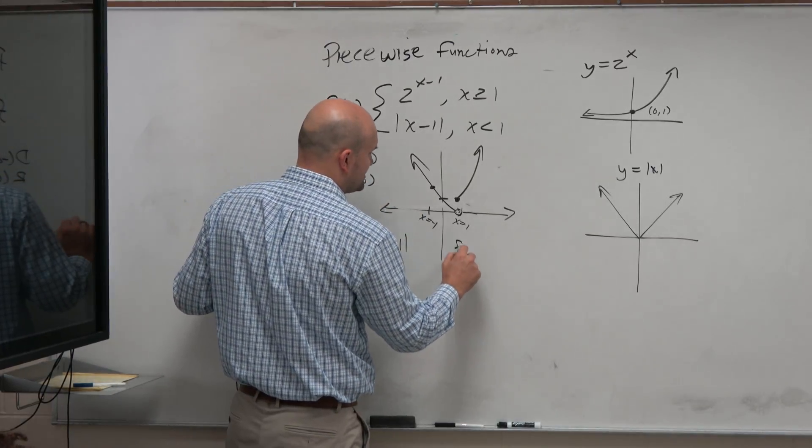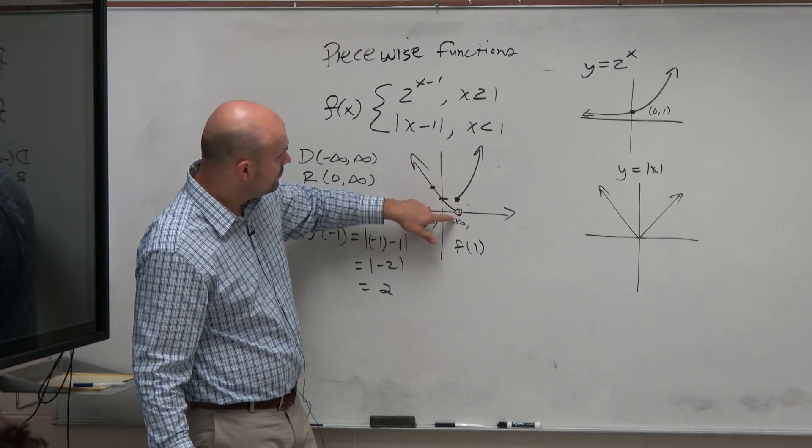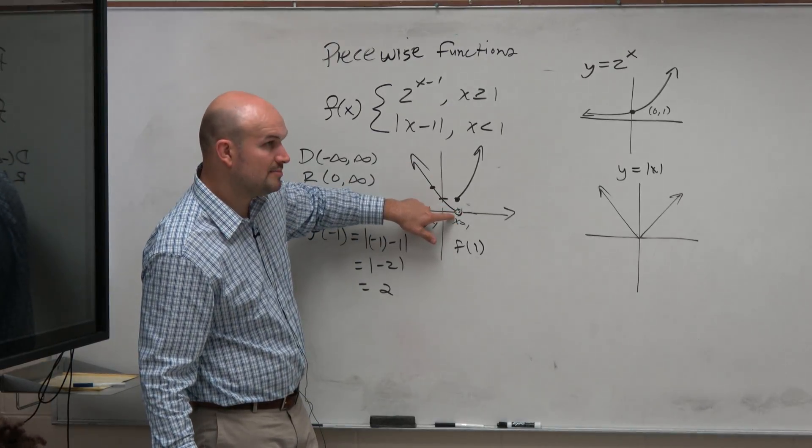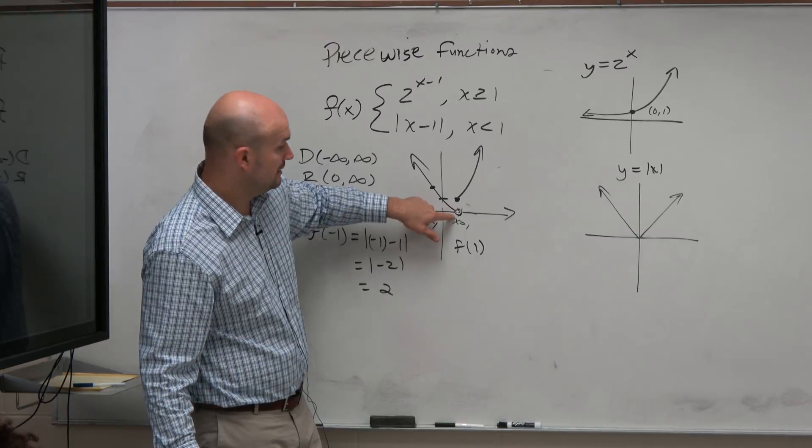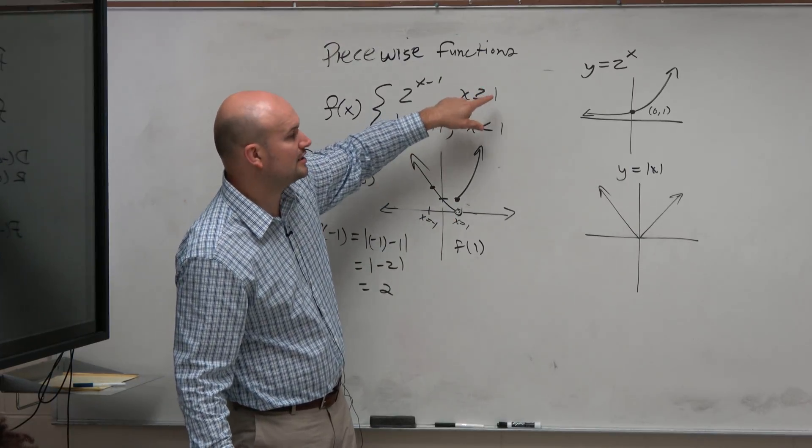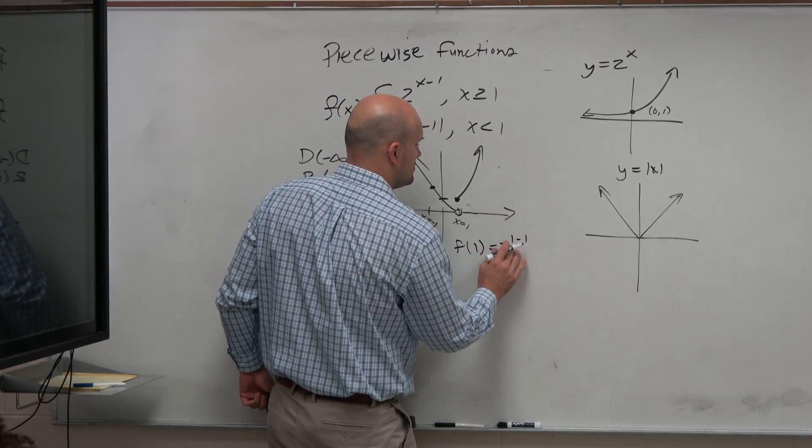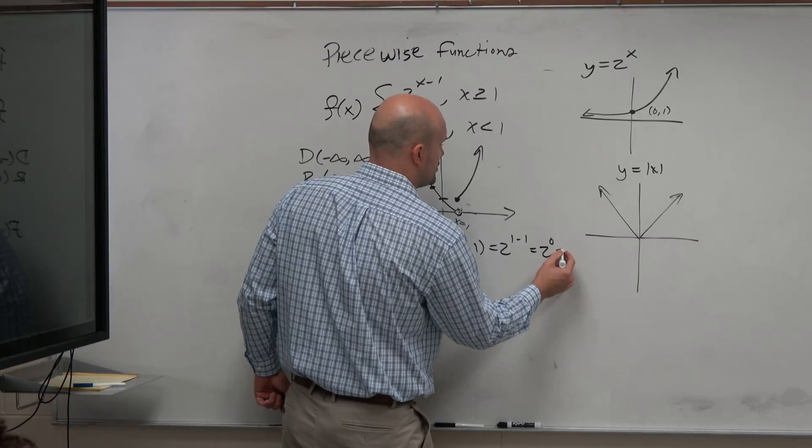And you could do this again, guys. You could do this for f of 1 as well. Like here, f of 1, you look at this. Well, we can't plug in 1 here into the absolute value, because it's undefined at 1. But it is defined in this equation. So you say, that's where x is greater than or equal to 1. So you just plug in a 1 there, 2 to the 1 minus 1, which equals 2 to the 0, which equals 1.